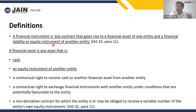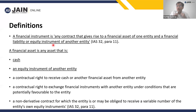IAS 32, IFRS 7, and IFRS 9 — very important standards. Out of roughly 33 to 35 IFRS standards in scope for the SBR paper, these three are very core standards. You have to know the bucketing of standards — which three or four standards should be read together. In about nine to ten different sets, you can group all 33 to 35 IFRS standards.